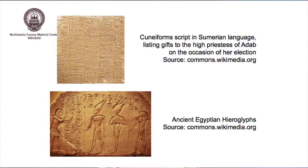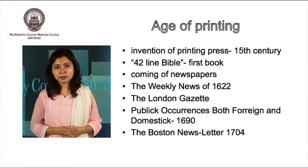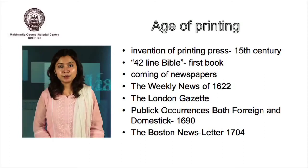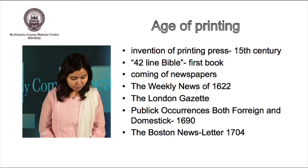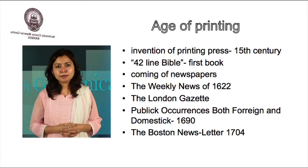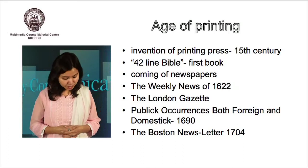These are a few examples you can see on your screen — the ancient Egyptian hieroglyphs and the Sumerian language that was developed. Then comes the age of printing, which came with the invention of the printing press by Johannes Gutenberg in the 15th century. The first book developed was the 42-line Bible. Then we see the coming of newspapers — the first news pamphlet to start regular publication was the Weekly News in 1622, followed by the London Gazette, Public Occurrences Both Foreign and Domestic in 1690, and the Boston Newsletter in 1704. These papers carried information related to different aspects of life and marked a new era in the history of human communication.